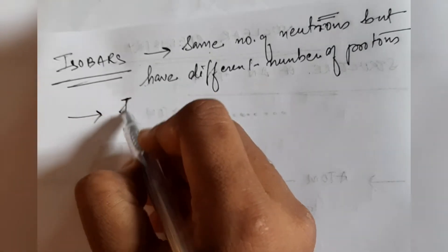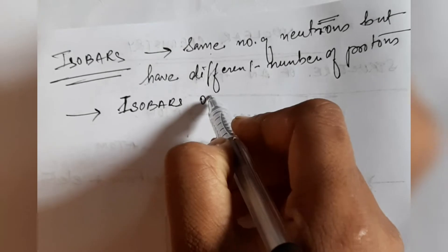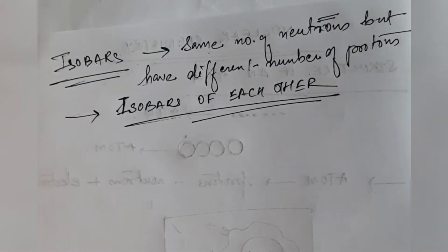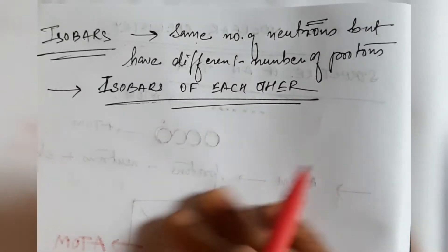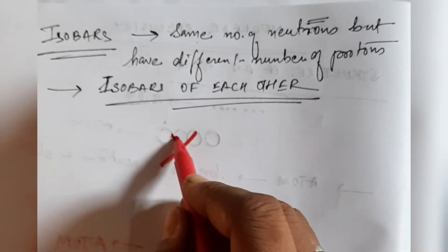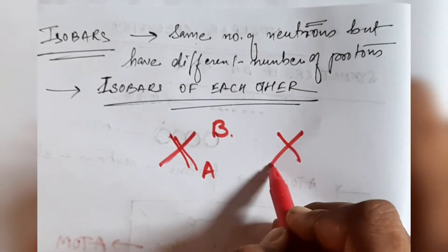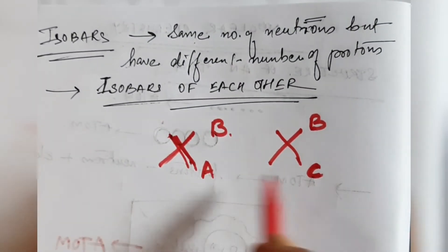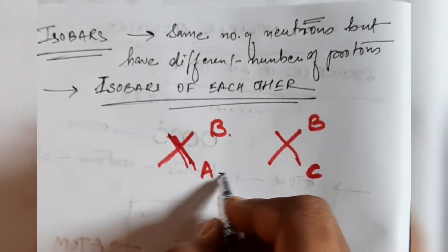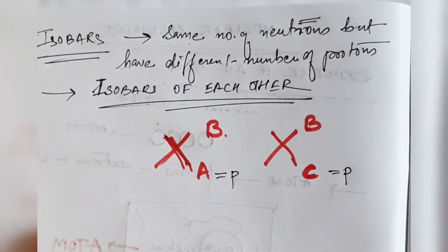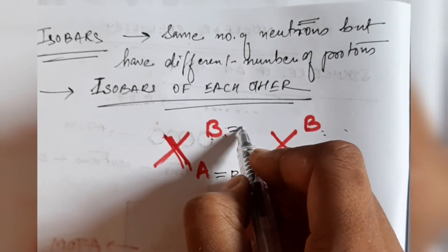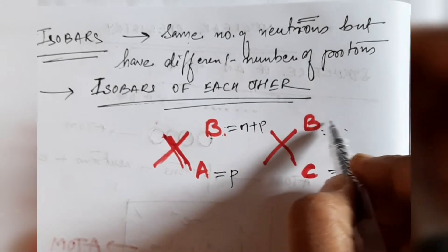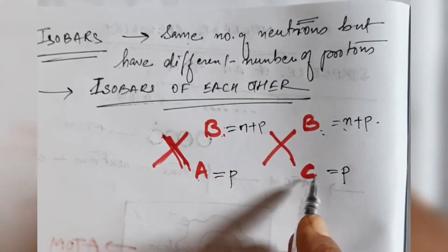Isobars are elements that have the same mass number but different numbers of protons. If we write two elements as ᴮ_A X and ᴮ_C X — where B is the mass number and A and C are different atomic numbers — then the mass number B is the same for both, while the atomic number, which is the number of protons, is different.